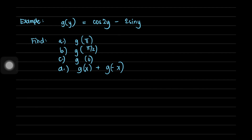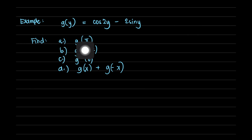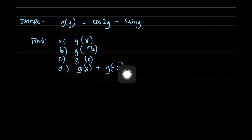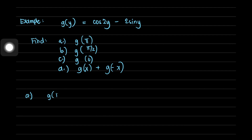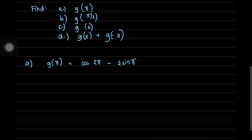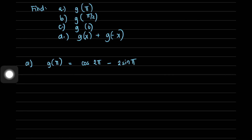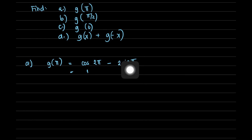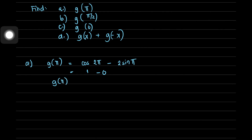In this problem, we are given g(y) = cos(2y) - 2sin(y). Find g(π), g(π/2), g(0), and g(x) + g(-x). For part (a), replacing y with π: g(π) = cos(2π) - 2sin(π). Cosine of 2π is 360°, which equals 1. And 2sin(π) = 2sin(180°) = 0. So g(π) = 1 - 0 = 1.